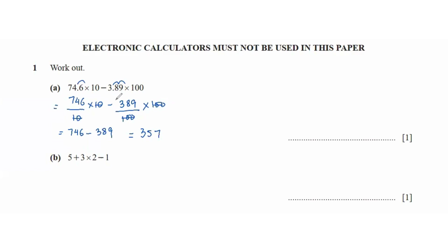Always remember: when you have decimals being multiplied by 10s or 100s, convert the decimal into a fraction, cancel out the zeros, and then subtract or add — whatever the question is asking you to do.